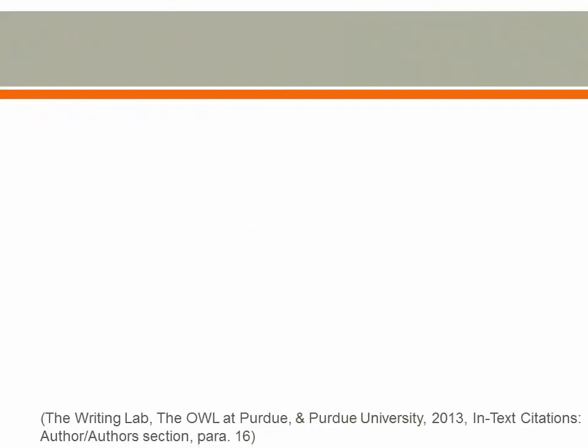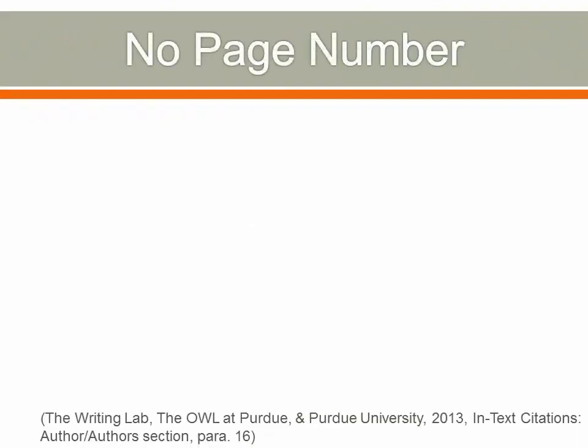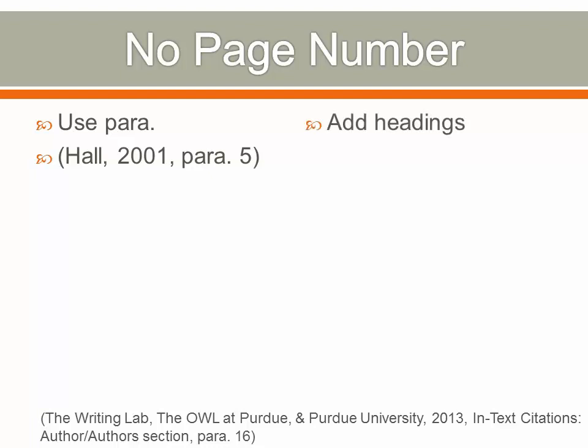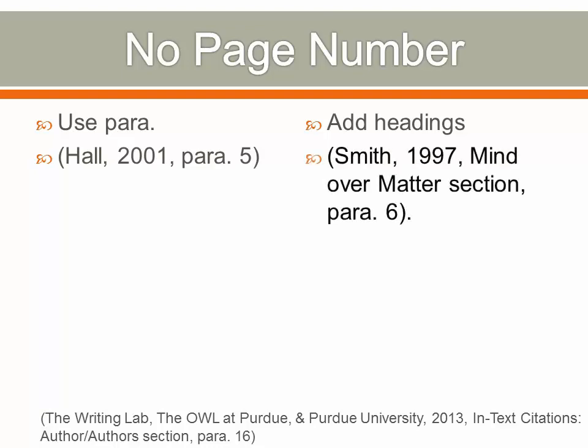When an electronic source lacks page numbers, you should try to include information that will help readers find the passage being cited. When an electronic document has numbered paragraphs, use the abbreviation "para." followed by the paragraph number. If the paragraphs are not numbered and the document includes headings, provide the appropriate heading and specify the paragraph under that heading.